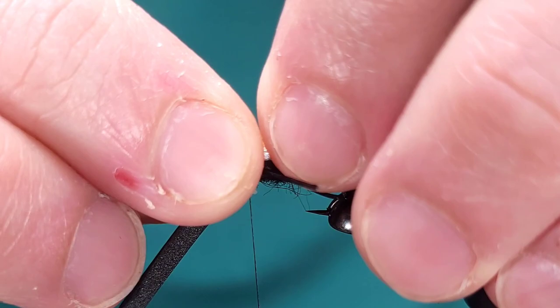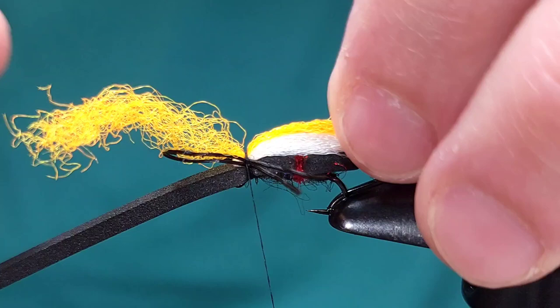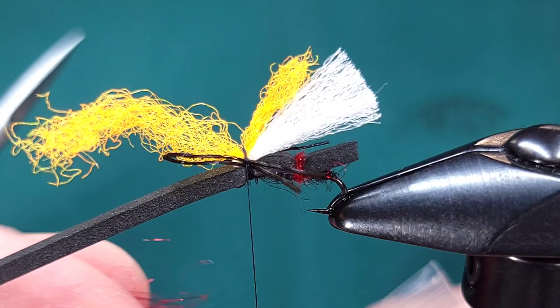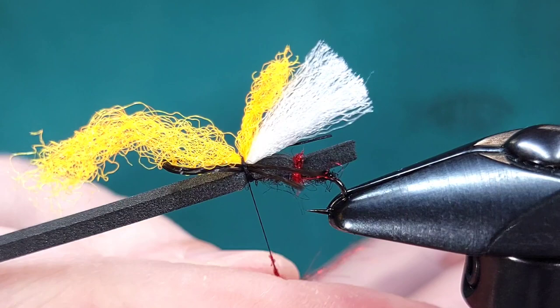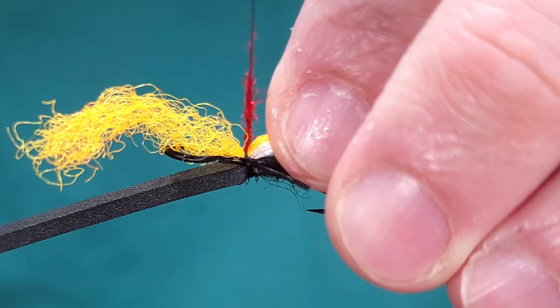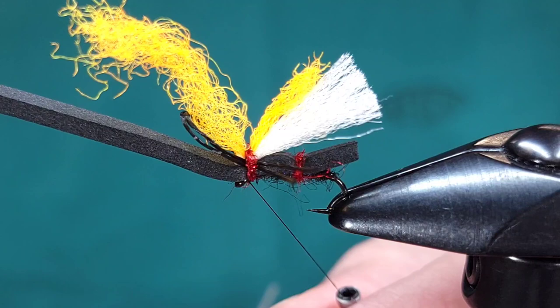I'm going to leave this as is and finally I'm going to add again another little red hot spot. Again you can use ice dub. You don't have to add this one at all. Mix it up, make this fly your own, do whatever you prefer. I'm going to take two wraps and then I'm going to wrap in front of this foam to prop that foam up and to whip finish it.